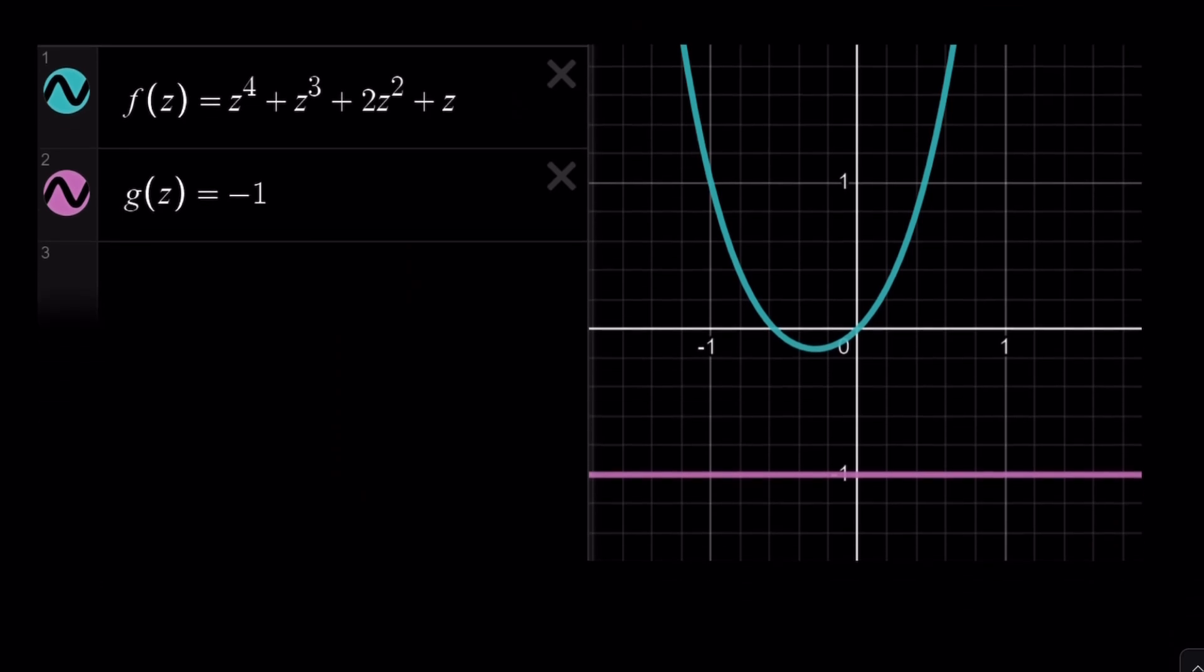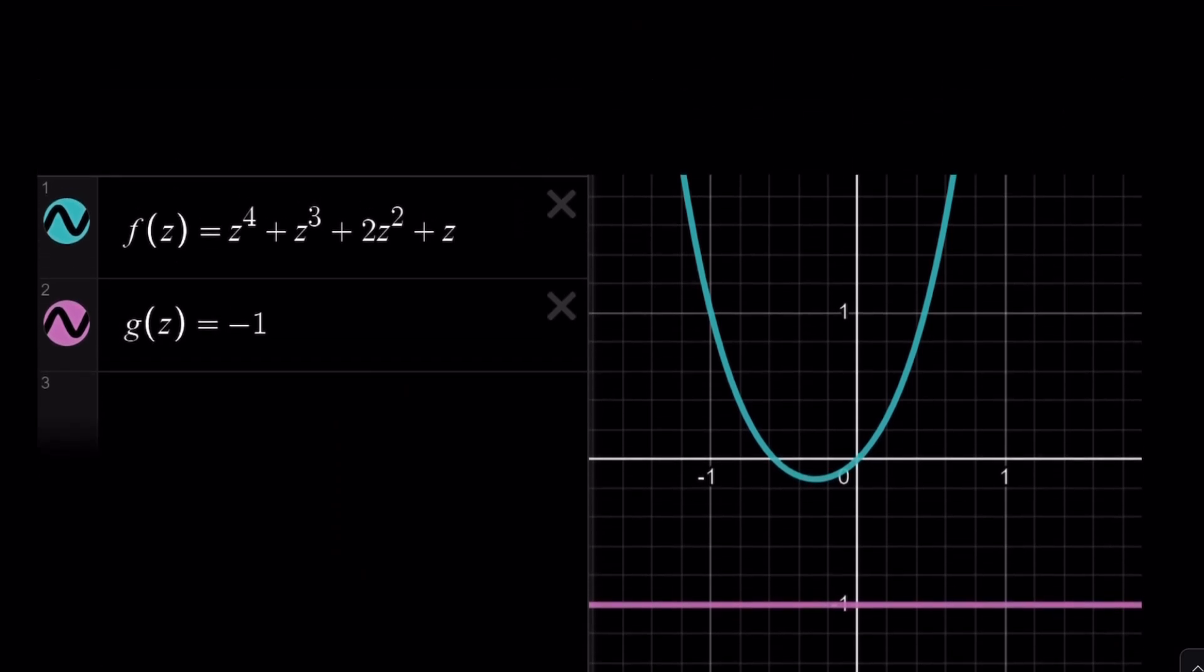The graph is really nice. Look at this. There is no intersection points. Is that a surprise? Of course, there are no real roots.